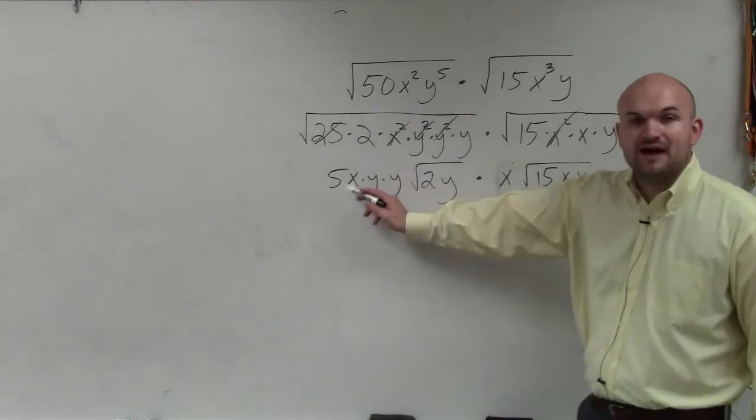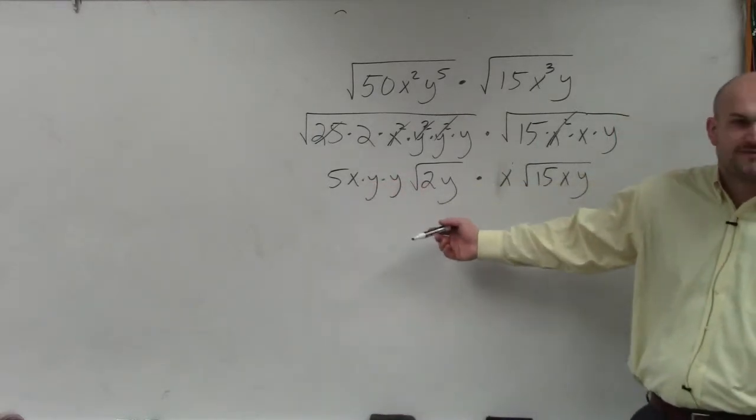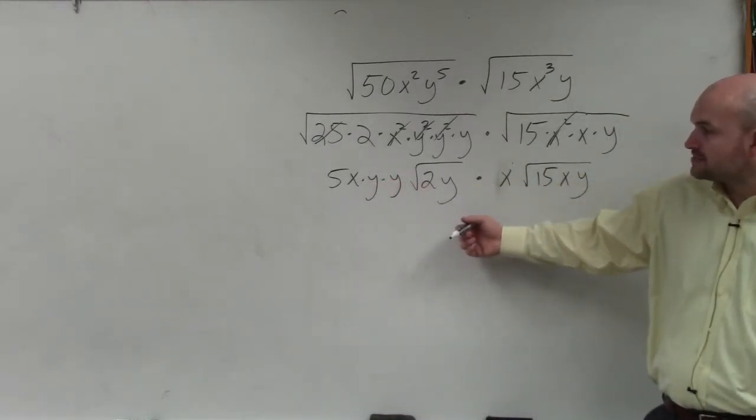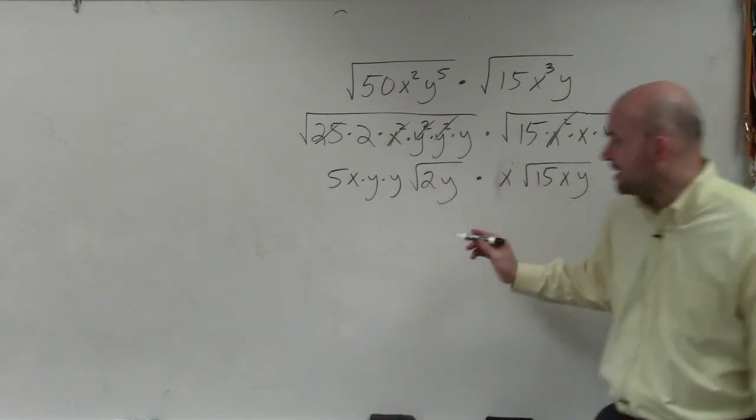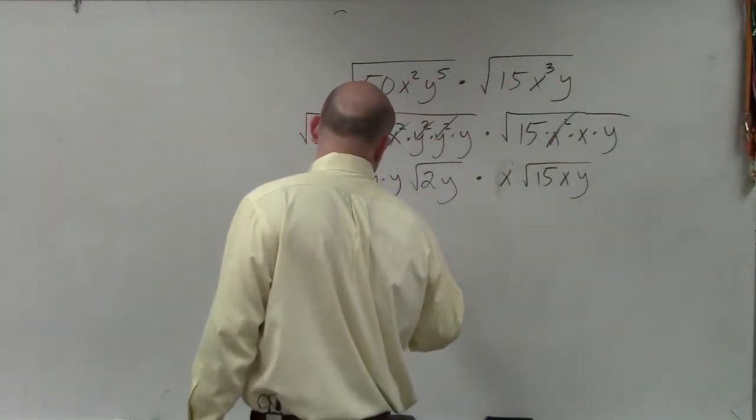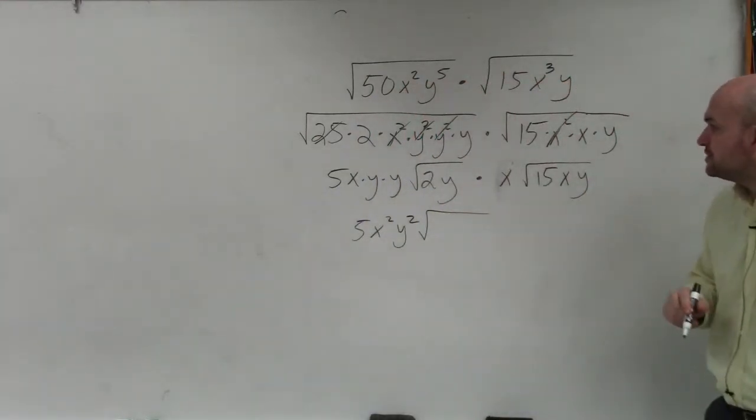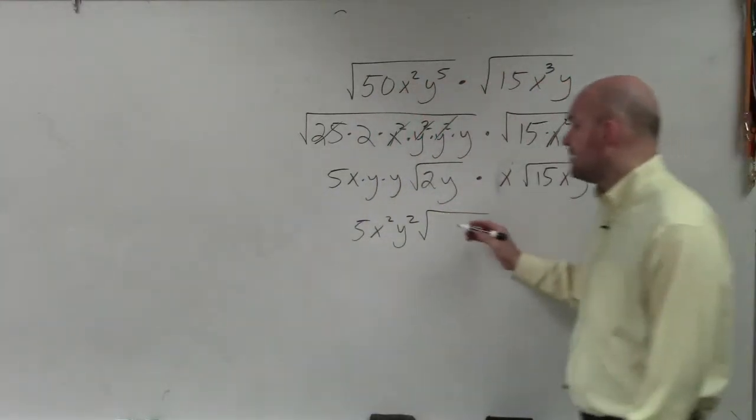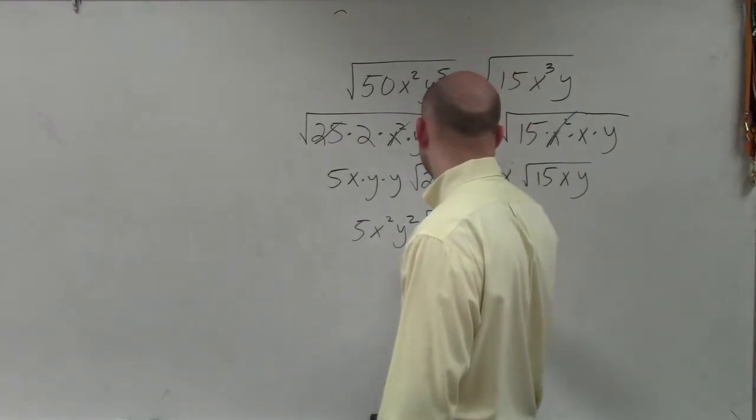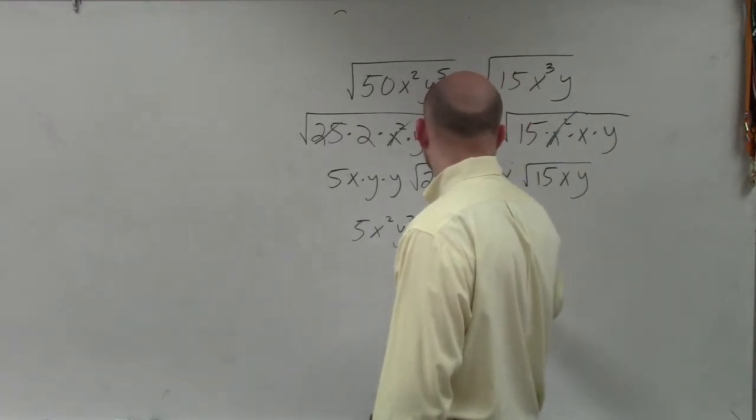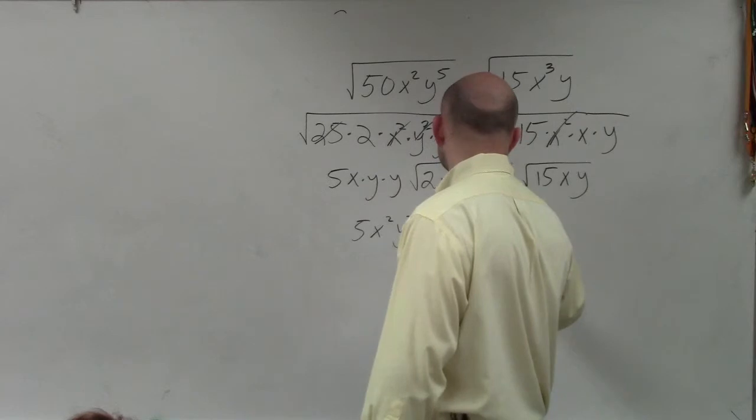So here, I have 5xy times y, which is really 5xy squared. I can multiply by another x, so that's going to leave me with 5x squared y squared. In the radical, I can do 2 times 15, which is 30, and y times y gives y squared. So I have 30xy squared.